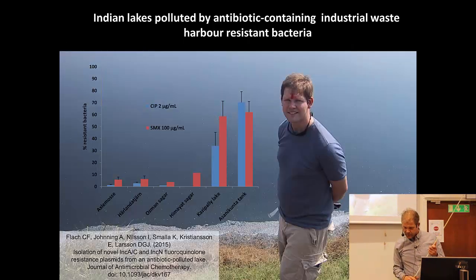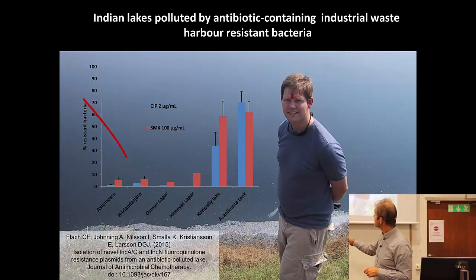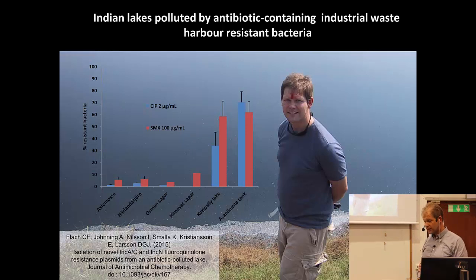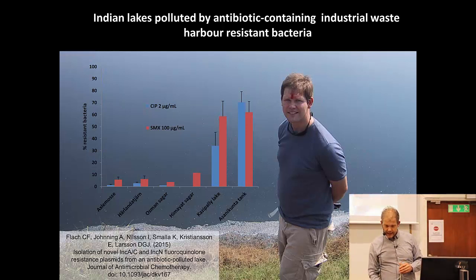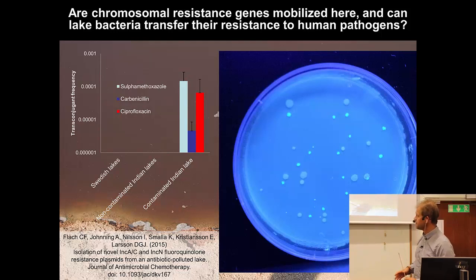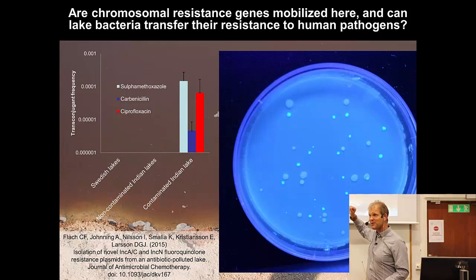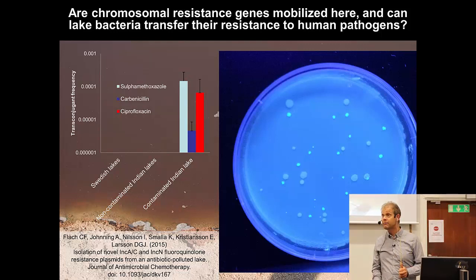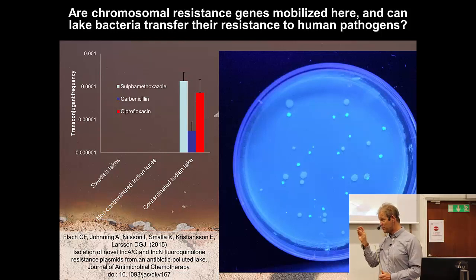If we culture bacteria from these places and compare it to Swedish lakes, some other Indian lakes, and some lakes where they dump wastewater from the manufacturing sites, you can see much higher levels of resistance there. The big problem is when resistance factors are transferred to pathogens. So we did experiments with sediment from the shores of these contaminated lakes, letting them grow together with E. coli bacteria that were not resistant to antibiotics. These E. coli were tagged with a glowing green protein so we could identify them afterwards.